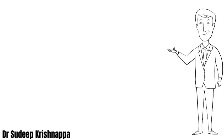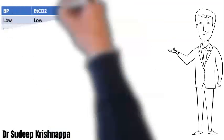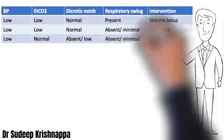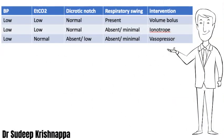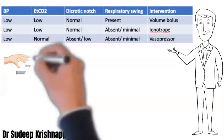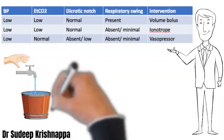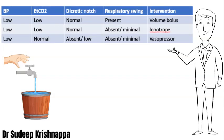To summarize: when we have a patient with low blood pressure, look at three parameters — end-tidal CO2, the dicrotic notch, and the respiratory swing — in order to choose the appropriate intervention. If BP is low, look at EtCO2 first. If EtCO2 is low, it suggests cardiac output is the problem. Then look at the dicrotic notch; if it is normal, look at the swing. If there is an exaggerated swing, the low cardiac output is likely due to hypovolemia, and the appropriate intervention is a volume bolus.